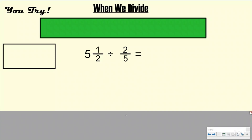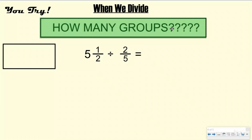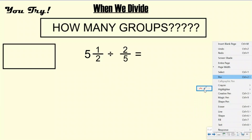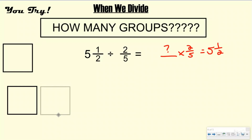Let's take a look at a you-try problem. Go ahead and pause the video and try this one out by yourself, remembering that we are thinking about division as how many groups. If you were going to rewrite this using your fact family knowledge: how many groups of two-fifths equal five and one-half? That's the question mark we're trying to find. Go ahead and pause the video, draw out your model, and then push play when you're ready to check it. I'm going to go ahead and get my five and one-half out.